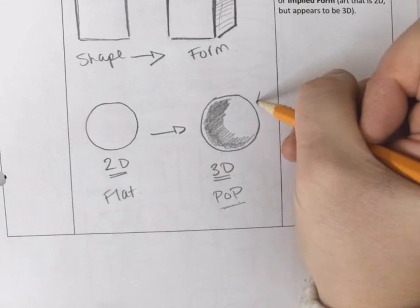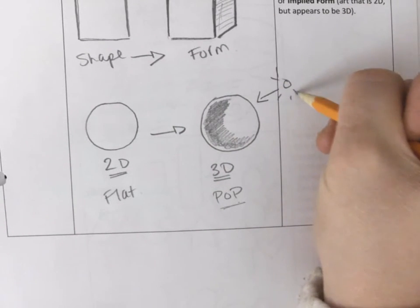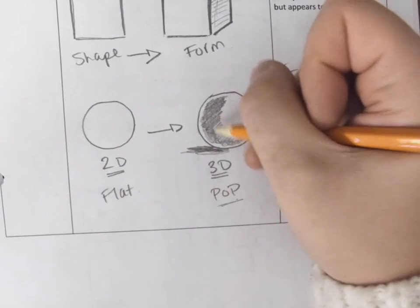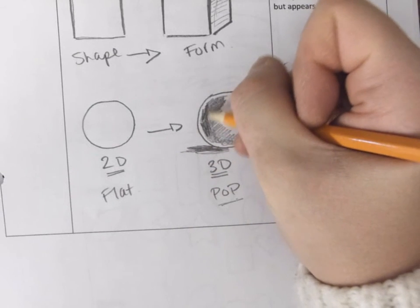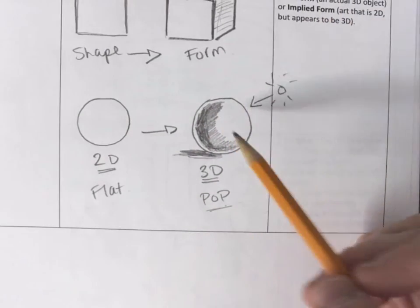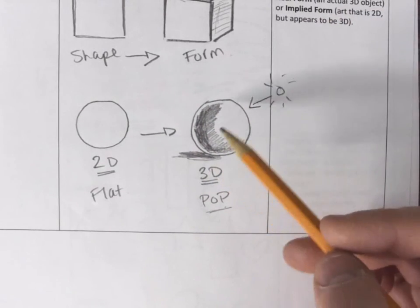Meaning that there's light shining from this side of it and it's creating a shadow. And now we have something that looks a little bit more 3D, so now it has form.